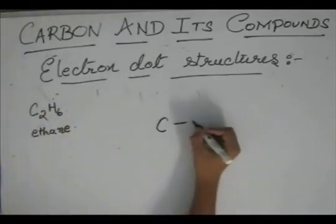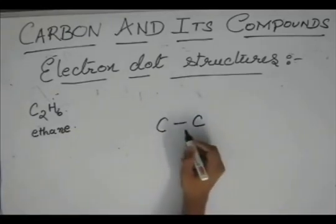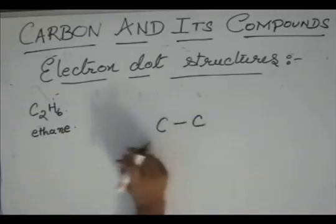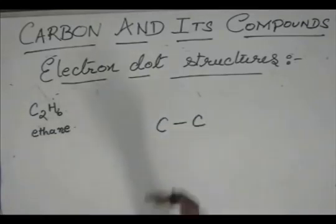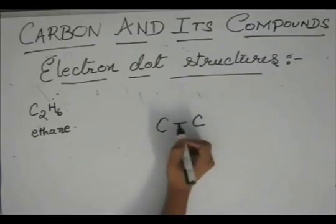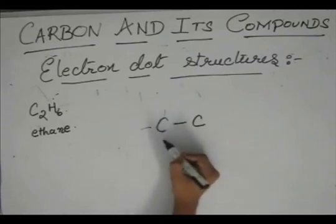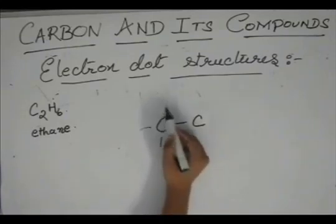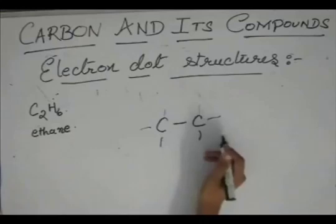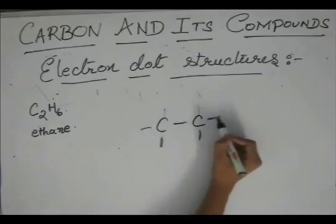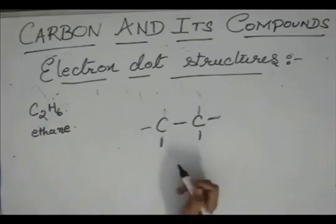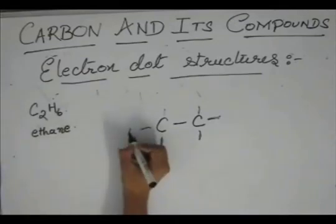Now in these type of compounds, first draw the C and C with a single bond. Now C has 4, C needs 4 electrons, so it has to bond with 4 other things. This C also has to bond with 4 other atoms. So these spaces should be filled. And who will fill them? Hydrogen.